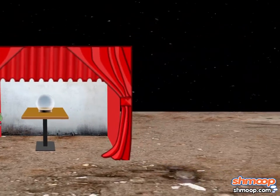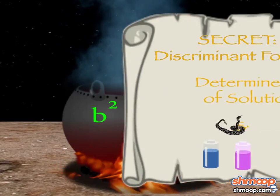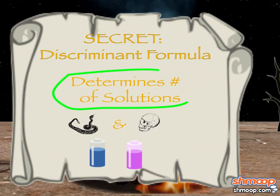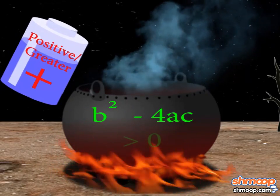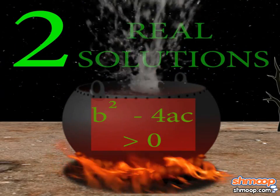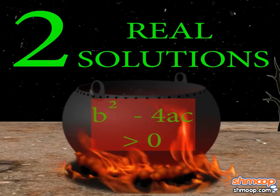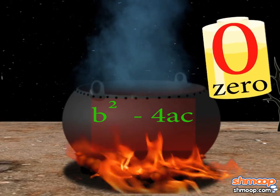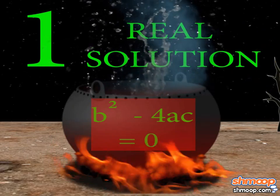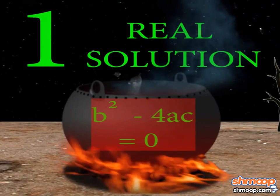The discriminant determines the nature and number of solutions of a quadratic equation. If b squared minus 4ac is positive, there will be two distinct real solutions. If b squared minus 4ac is zero, there will be one distinct real solution.